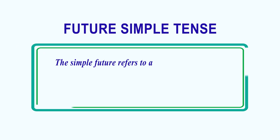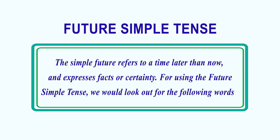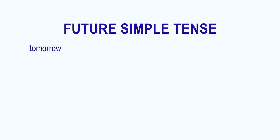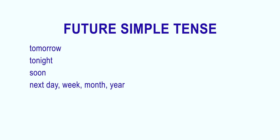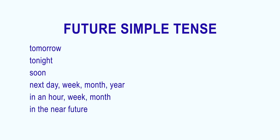The simple future refers to a time later than now and expresses facts or certainty. For using the future simple tense, we would look out for the following words: tomorrow, tonight, soon, next day/week/month/year, in an hour/week/month, in the near future, one of these days, or someday.